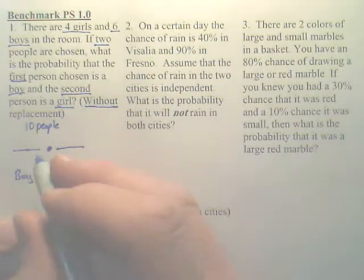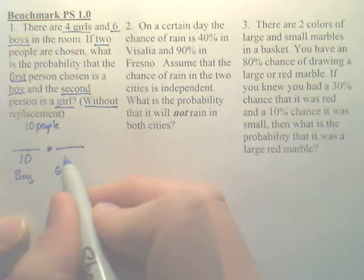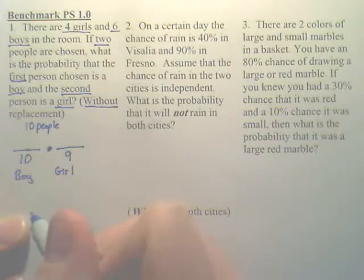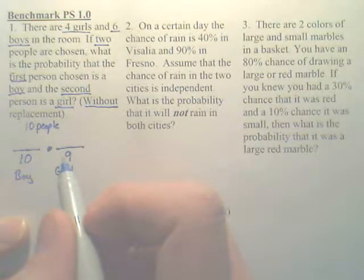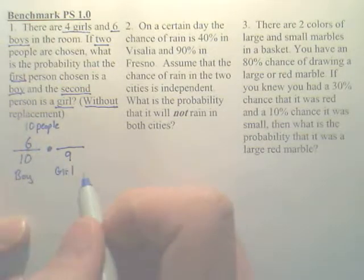Now, for a boy, how many people do we have to choose from? Ten. For the second one is how many to choose from? Nine. Because there's one less. For the first one, how many boys are there to choose from? Six. There are six boys. And how many girls? Four.